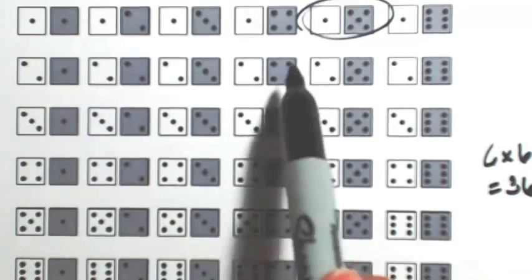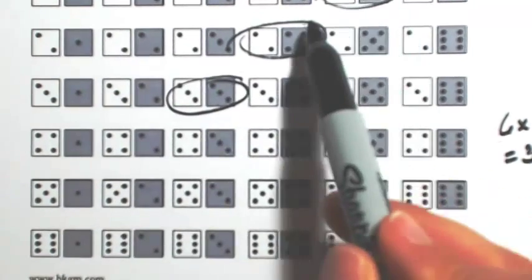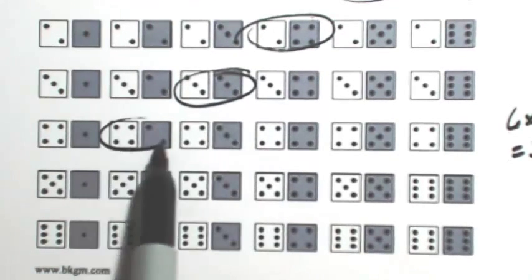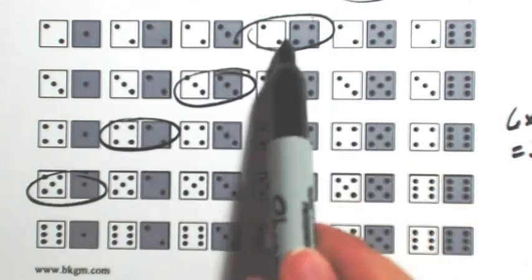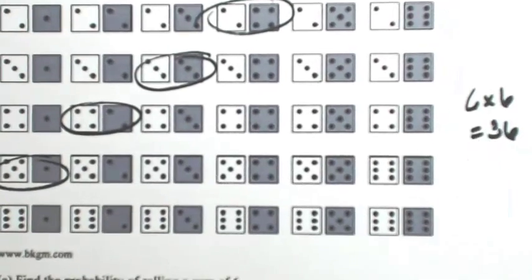In the next row there, the two and the four. In the next row, the three and the three. Notice that it's starting to move at a diagonal: four and two, five and one. One, two, three, four, five ways to get six out of 36 possibilities.